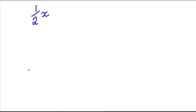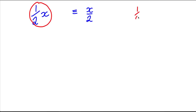Before we launch into the examples, there's one very important thing that students often get confused with. If I write one half X — that is, one half multiplied by X — that is equivalent to X over 2. Both of these things mean the same. Half multiplied by X: X as a fraction is X over 1, and multiplying fractions gives X over 2.